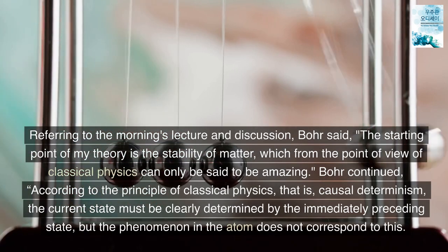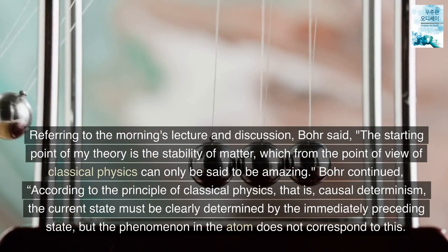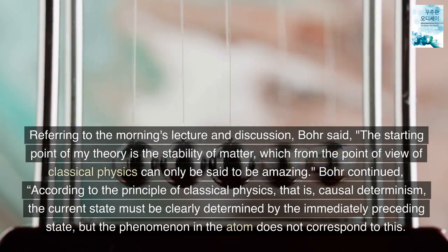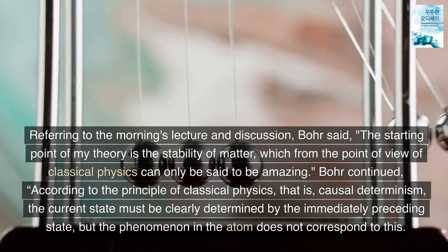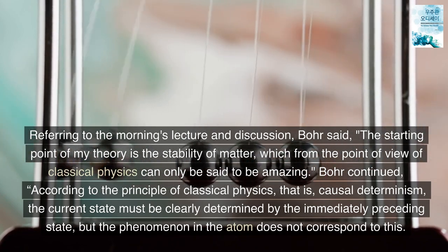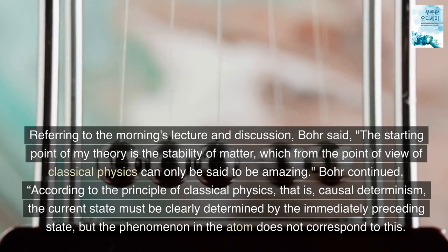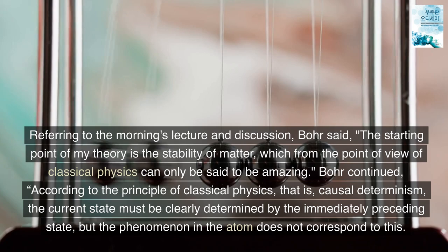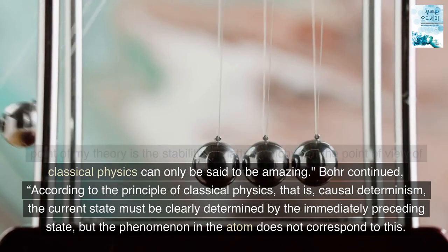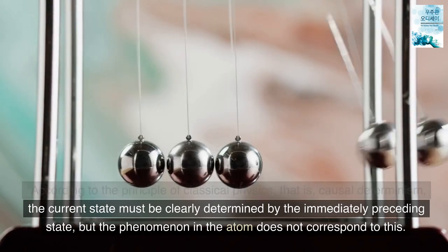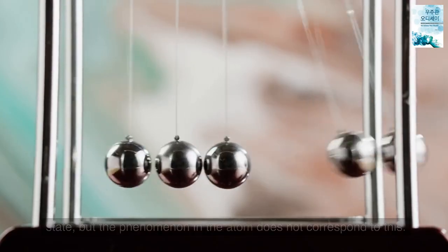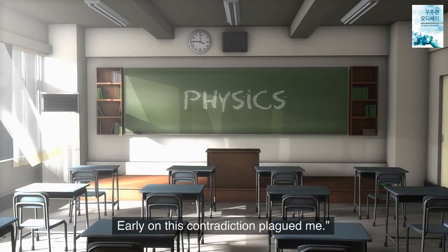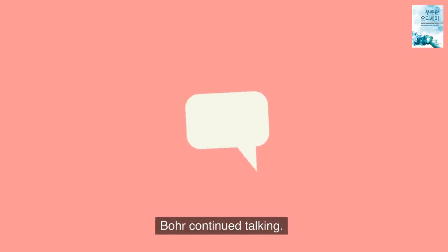Referring to the morning's lecture and discussion, Bohr said, the starting point of my theory is the stability of matter, which from the point of view of classical physics can only be said to be amazing. Bohr continued, according to the principle of classical physics, that is, causal determinism, the current state must be clearly determined by the immediately preceding state, but the phenomenon in the atom does not correspond to this. Early on this contradiction plagued me.